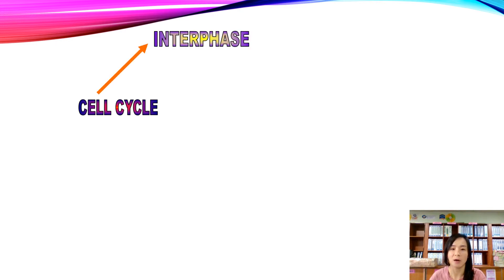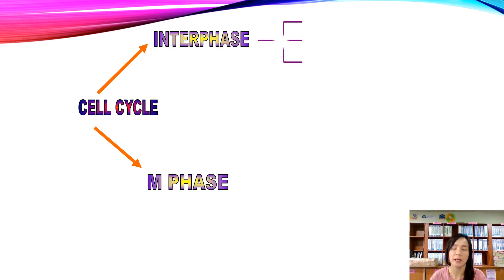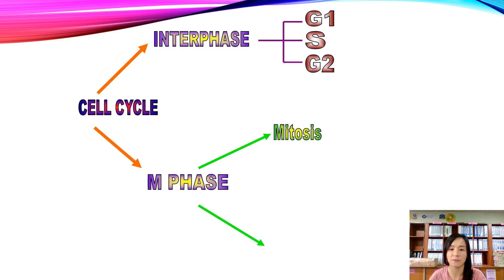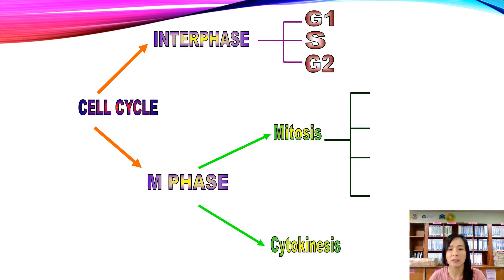Looking at the flowmap of the cell cycle: the cell cycle consists of interphase and M-phase. Interphase has three phases — G1, S, and G2. Always remember the sequence: G1, S, G2. M-phase consists of mitosis and cytokinesis, and mitosis itself is made up of four phases.